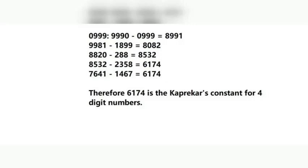Once you obtain 6174, this is the Kaprekar's Constant. To verify it, you redo the work: rearrange 6174 into descending order to get 7641 and ascending order to get 1467. 7641 minus 1467 is equal to 6174. We keep getting 6174 repeatedly — from now onwards, no other number will appear. This 6174 is the Kaprekar's Constant for any 4-digit number.